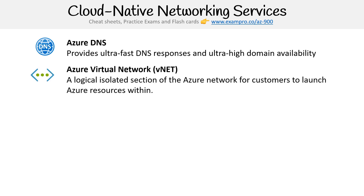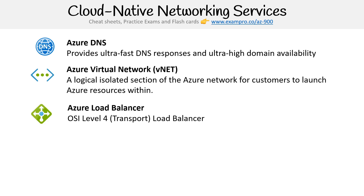Then you have Azure Virtual Network — we talked about this prior but we'll talk about it again. Short for VNet, a logical isolated section of your Azure network for customers to launch Azure resources within. Then you have Azure Load Balancer. As the name implies it is a load balancer, but this one is at level four transport, so it doesn't really understand requests like what a web application would send — it's more lower level.